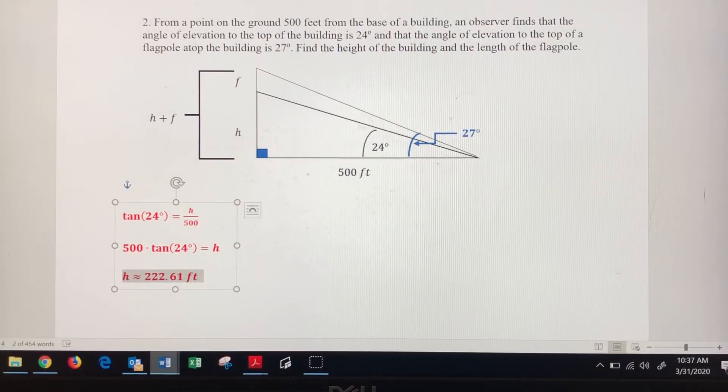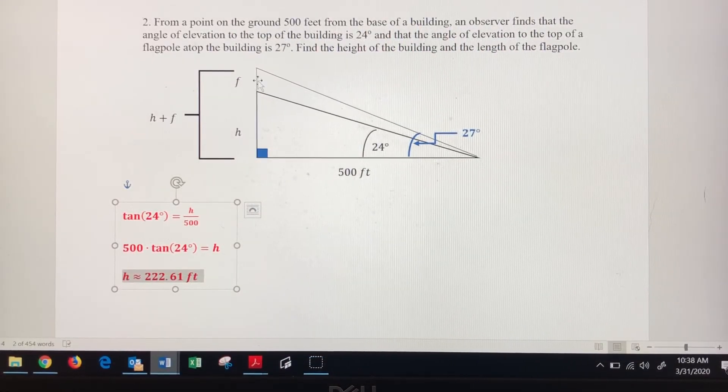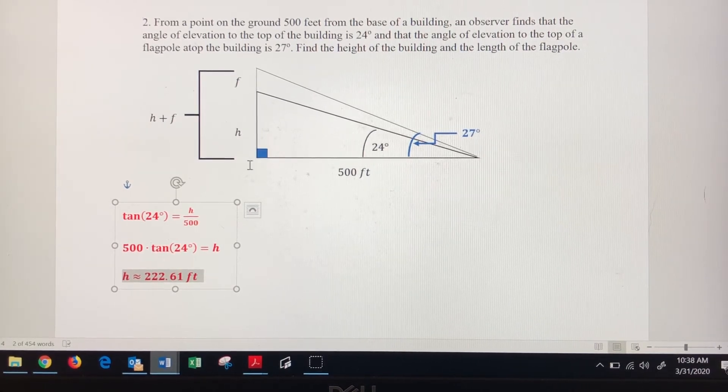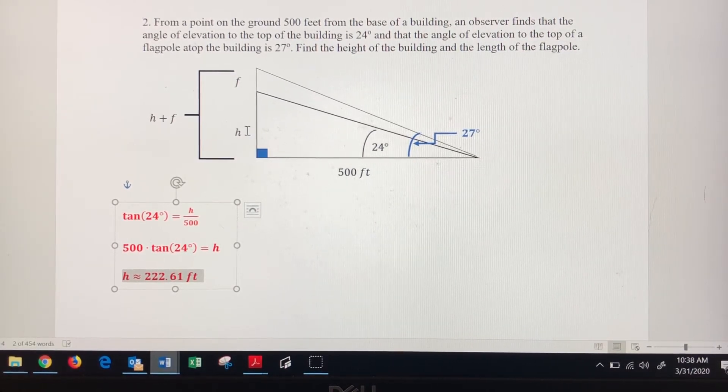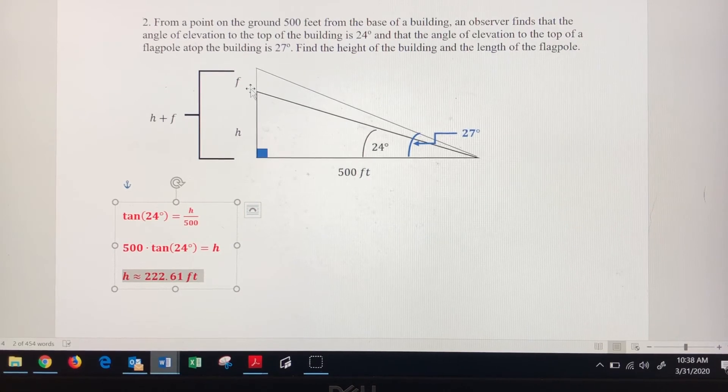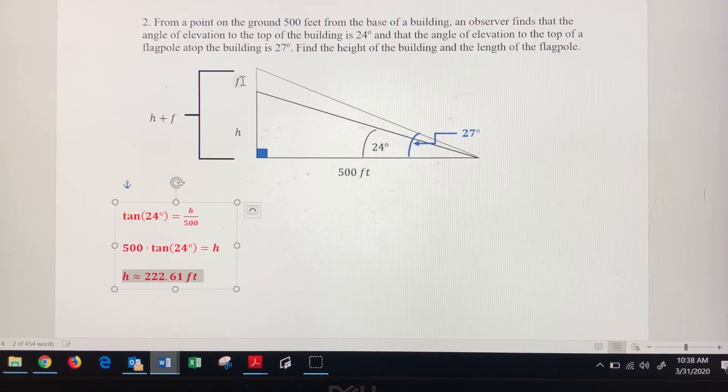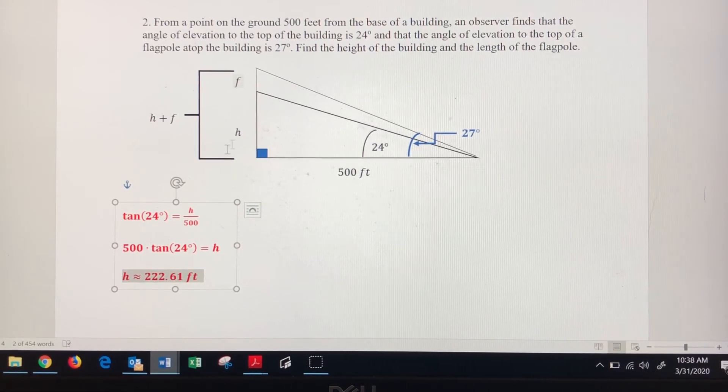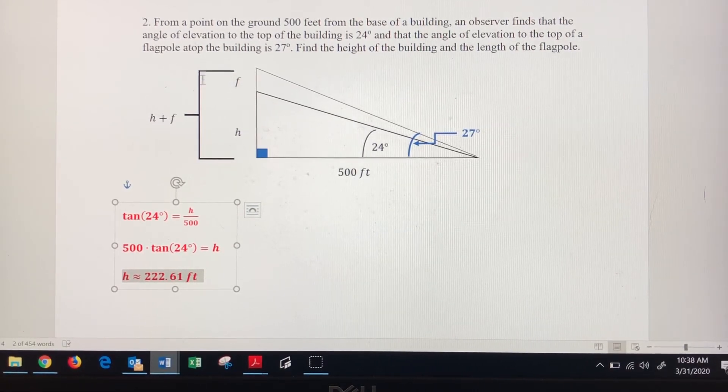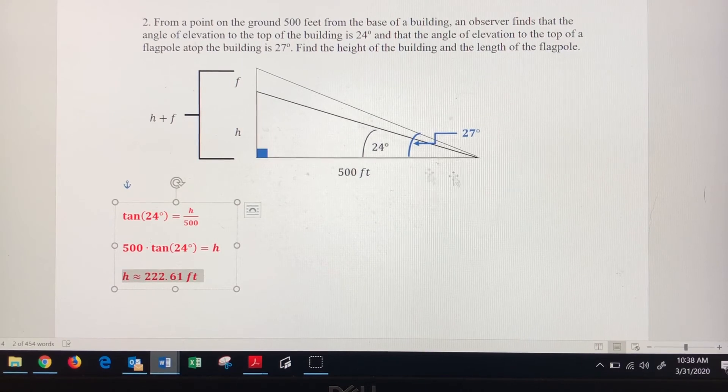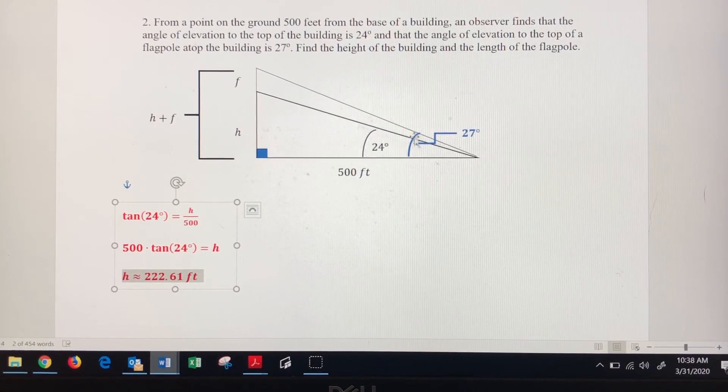Now I want to find the height of the flagpole, but I can't do that without finding the entire height of the height of the building and the flagpole first. So I'm going to have to find the height of the flagpole indirectly with a third equation here in just a second. But first we need to find this entire height here, including both the building and the flagpole. And to do that, I'm going to have to use this 27 degree angle of elevation.